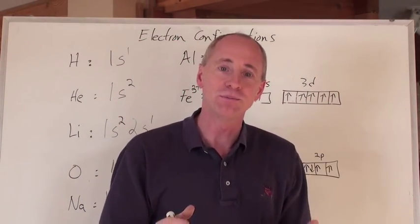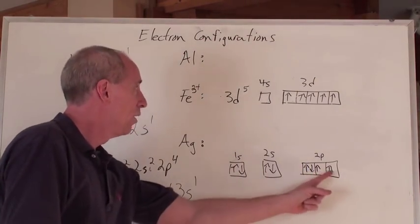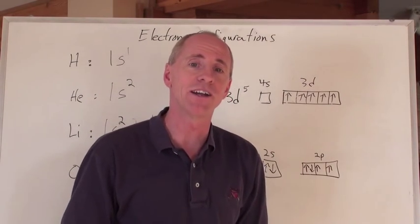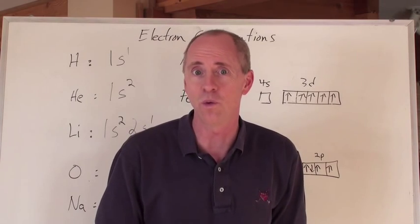Ions form by either adding electrons to them or removing electrons. And when you use these box diagrams and electron configurations, it really, really explains it so well.